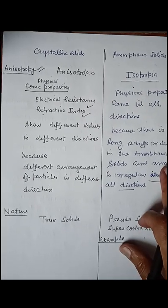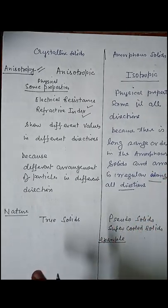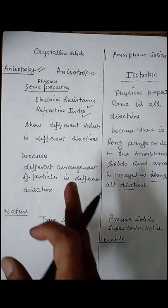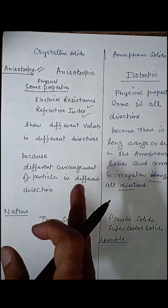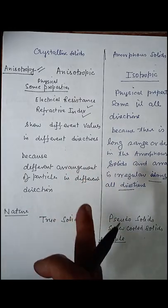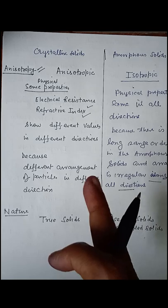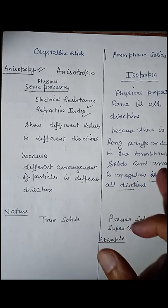We will discuss in our next class how crystalline solids are anisotropic and amorphous solids are isotropic in more detail.